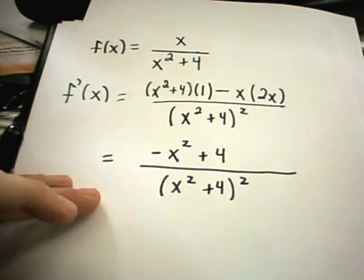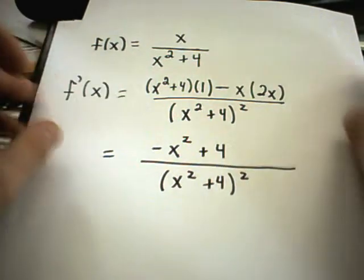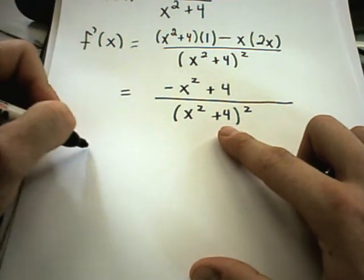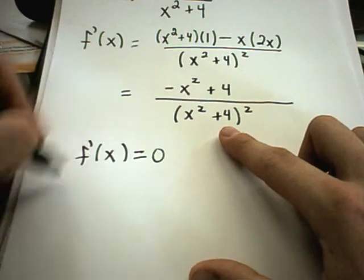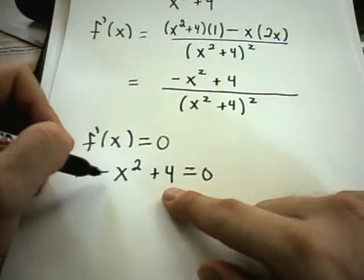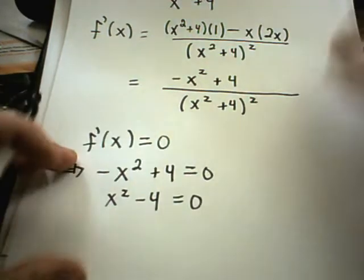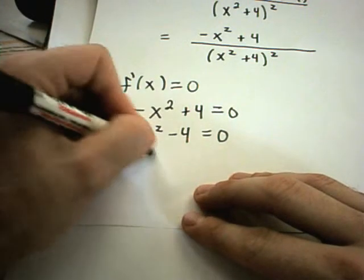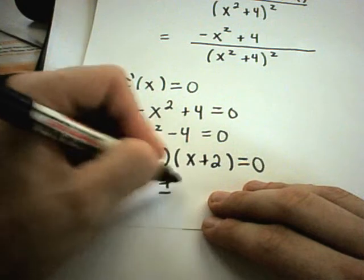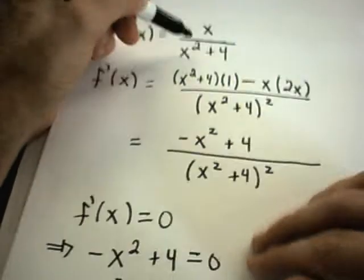So if I keep simplifying, I'm going to have x squared minus 2x squared, which gives me negative x squared plus 4 in the numerator, and x squared plus 4 quantity squared on the bottom. Now we're going to have to figure out the critical numbers — where it's undefined or where it equals zero. There's nothing that's going to make the denominator equal zero. Setting the derivative equal to zero means the numerator has to equal zero. Multiplying both sides by negative 1 gives x squared minus 4 equals zero, which factors to x minus 2 times x plus 2 equals zero. So my critical numbers are positive and negative 2, which are certainly in the domain of the original function.